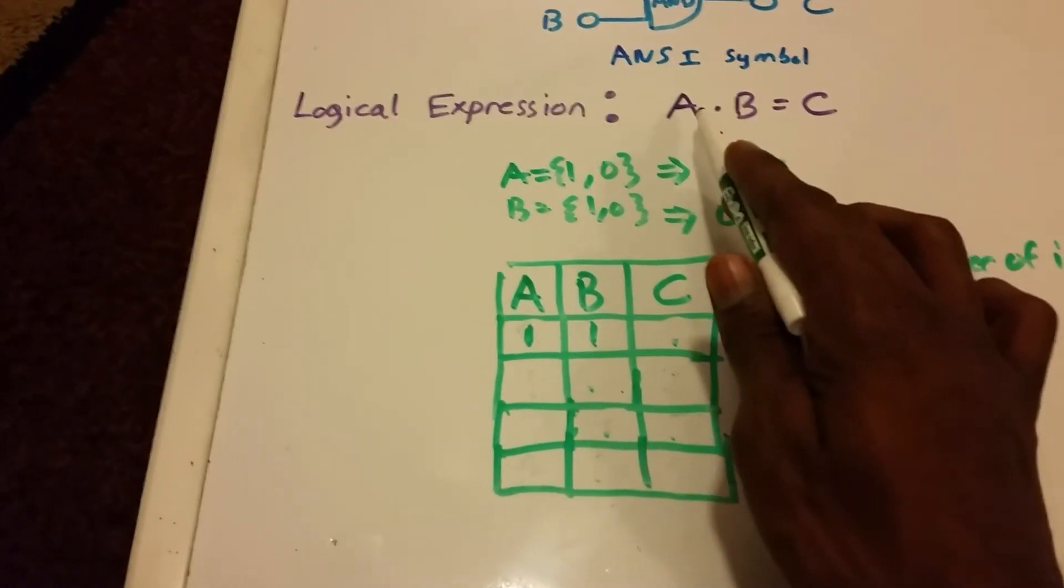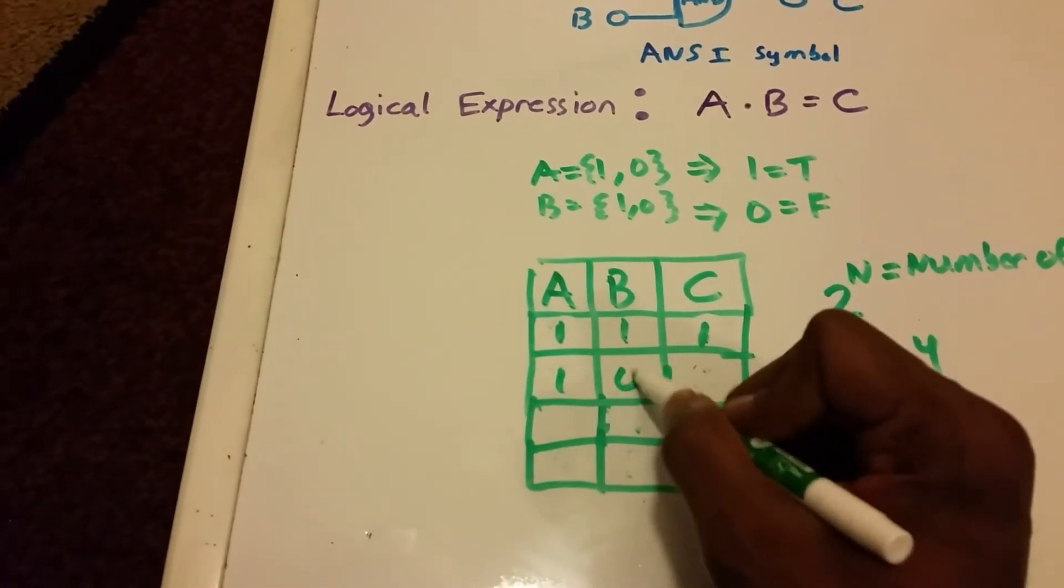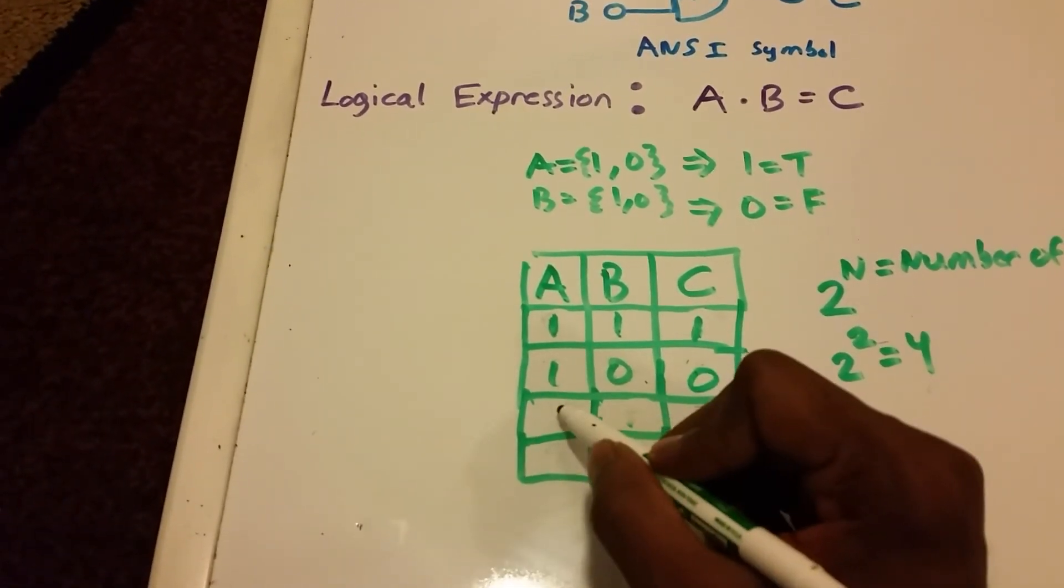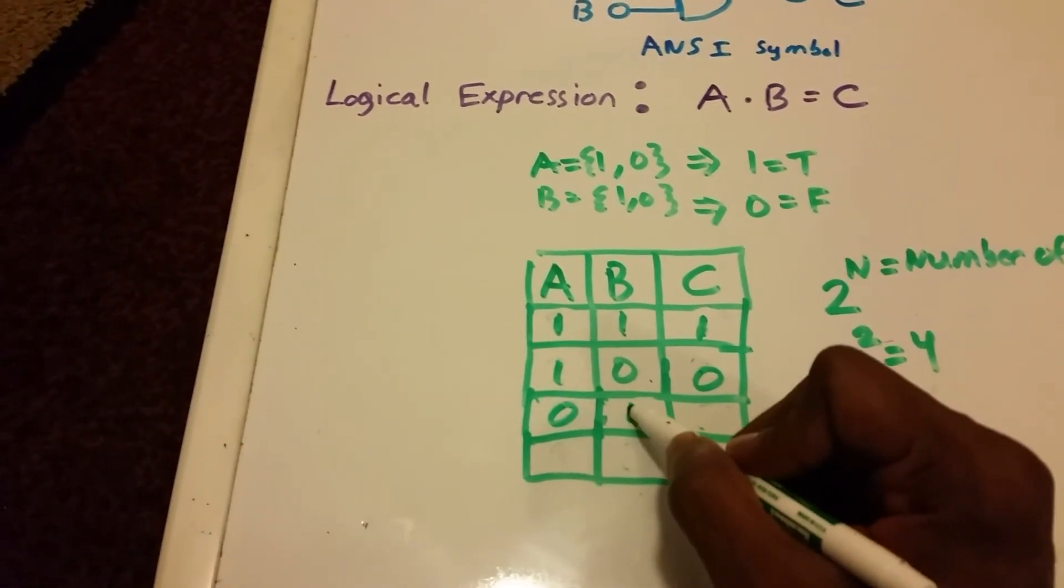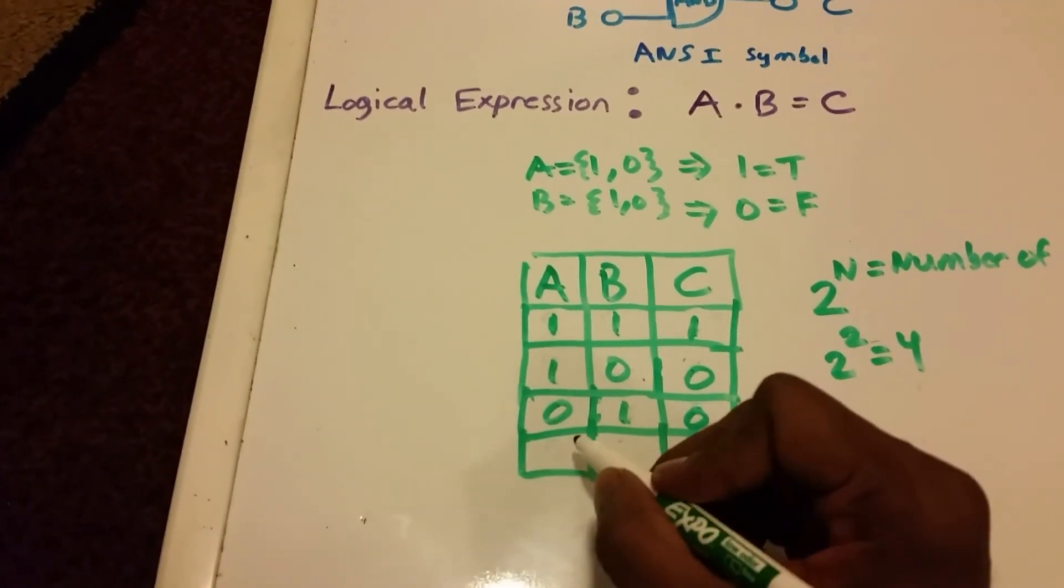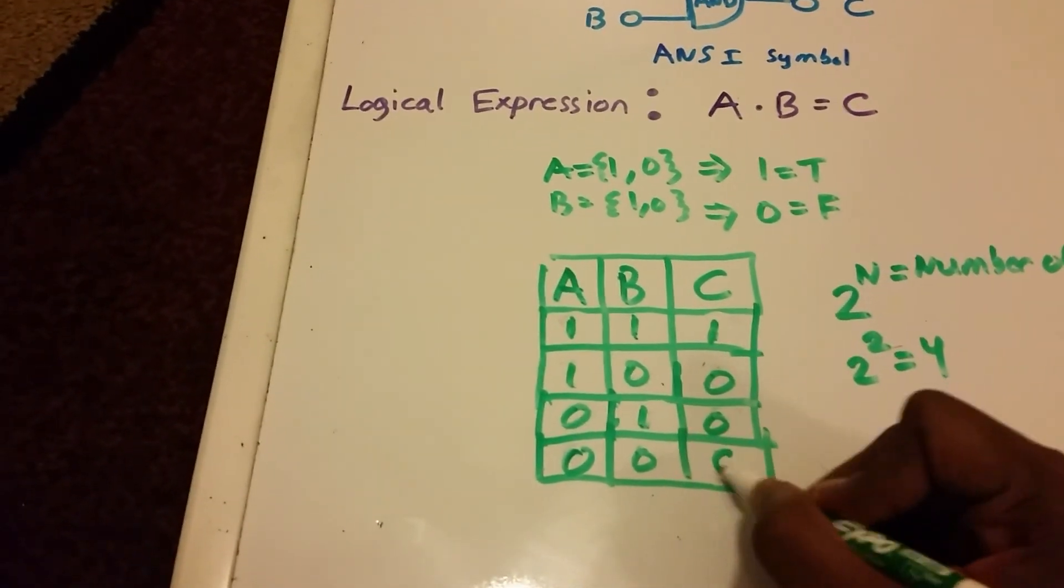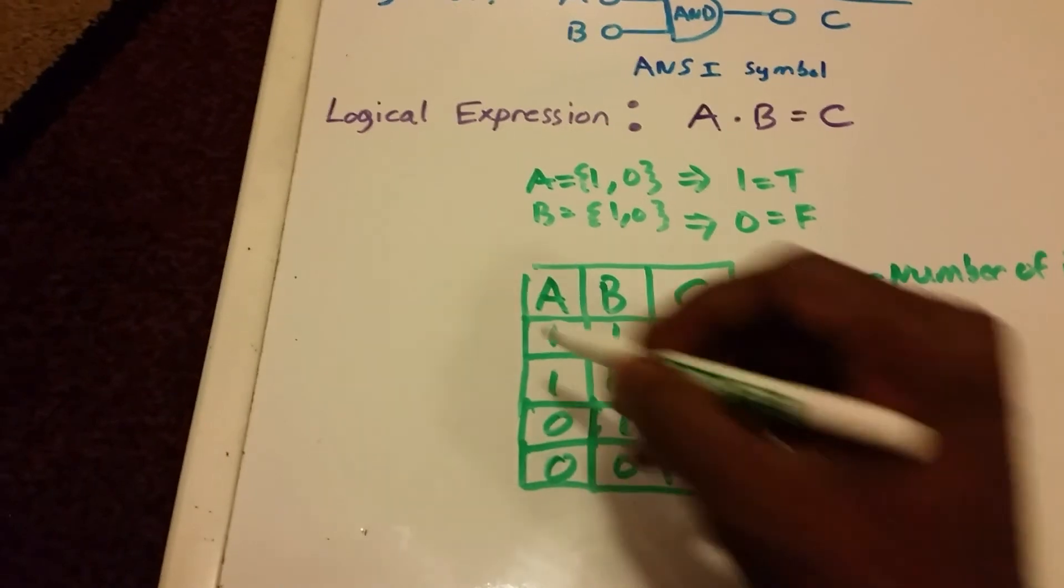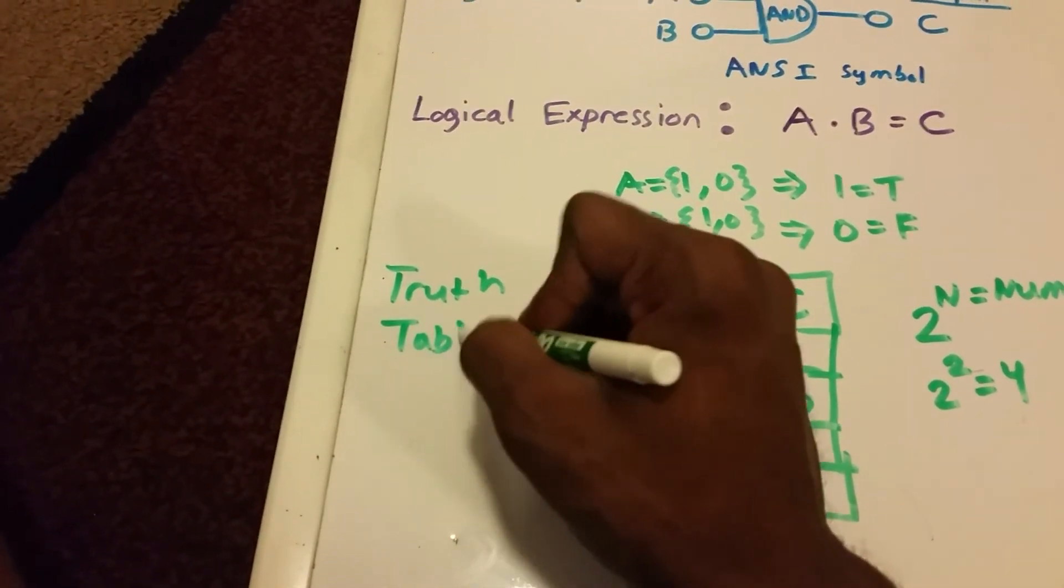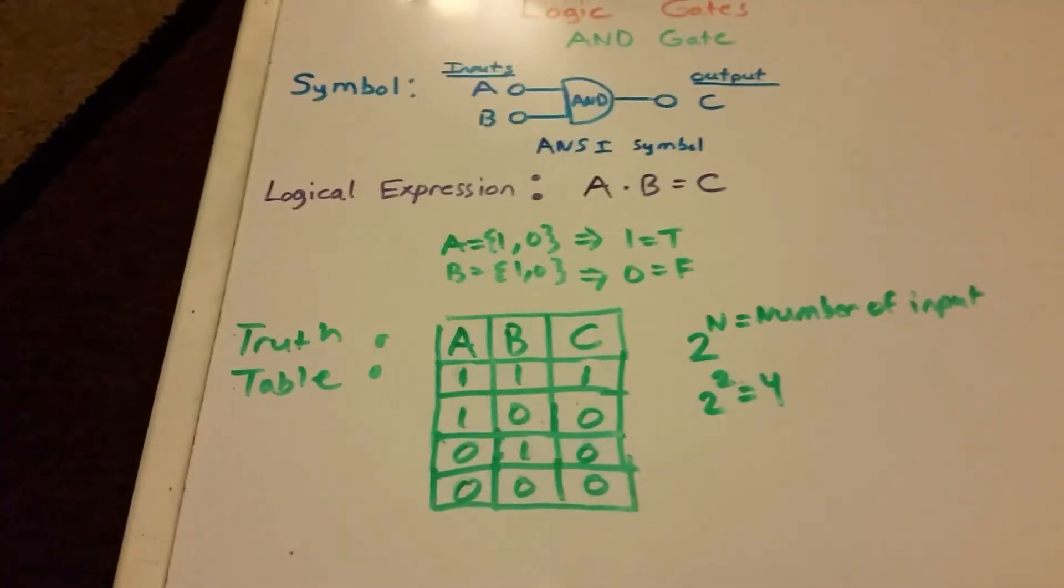So now we get 1 and 1, so we use this logical expression: 1 times 1 equals 1, so C equals 1. Now 1 and 0—we do 1 times 0, we get 0, so C is 0. And 0 and 1, so we do 0 times 1, which is 0. And then 0 and 0, so 0 times 0 equals 0. And that completes our truth table.